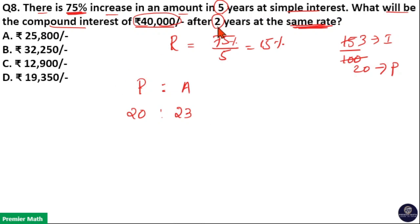Now we need to calculate compound interest for 2 years. So take the square of 20 units and 23 units.